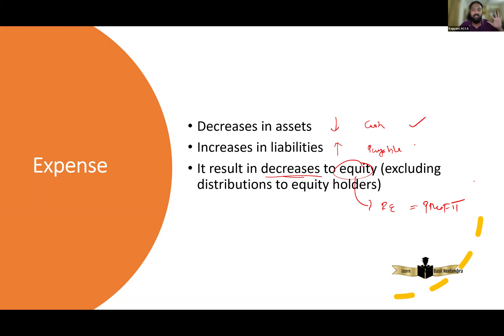So we have learned the definitions of the five elements: asset, liability, equity, expense, and income. Remember, these five items are known as elements.